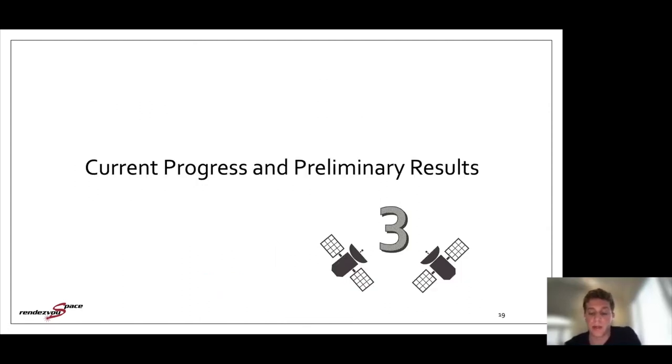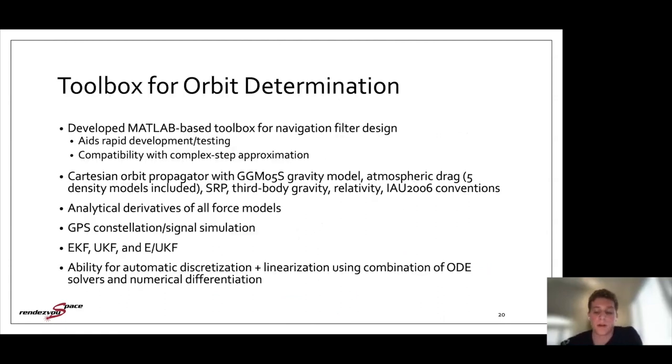So now I'll go into current progress and preliminary results. And while my goal is to use relative dynamics, eventually these preliminary results just use absolute dynamics of a single spacecraft, and it exposes some of the weaknesses of that approach as well. So as an aside, in this process, I made a toolbox for orbit determination to aid rapid development and testing of various filters. And I made it compatible with this numerical approximation method that I'll cover briefly. It includes most of the stuff that S-cube does. So higher order gravity, atmospheric drag, and I included a lot of different density models so I could experiment with those. And it also includes analytical derivatives of all the force models and GPS signal simulation, some basic filters. And it also allows for automatic discretization and linearization. So in case I want to test out an EKF, I can do that with a high precision numerical method.